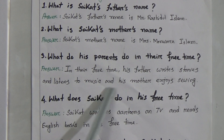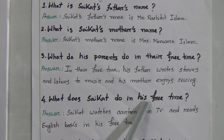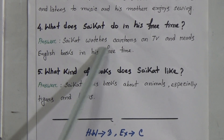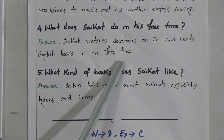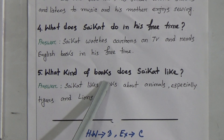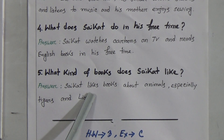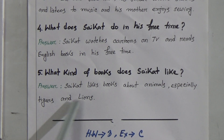And his mother enjoys sewing. Question Number 4: What does Shaykhoth do in his free time? Answer: Shaykhoth watches cartoons on TV and reads English books in his free time. Question Number 5: What kind of books does Shaykhoth like? Answer: Shaykhoth likes books about animals, especially tigers and lions.